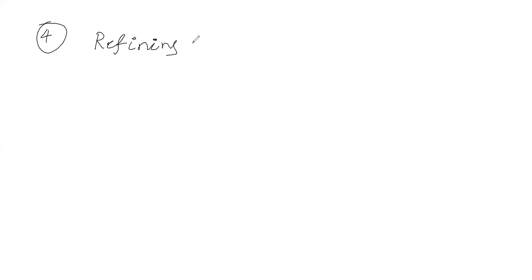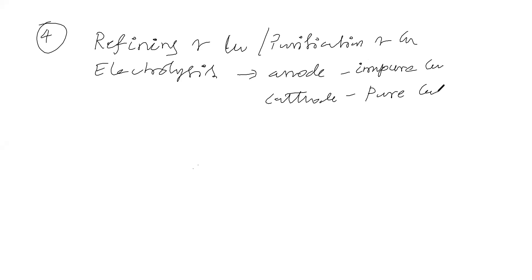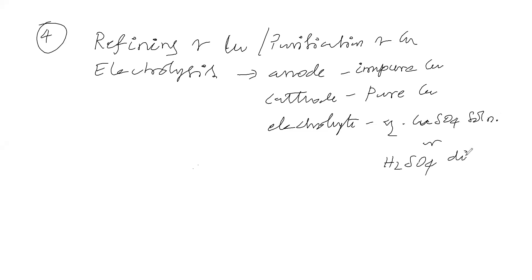In this refining of copper (electrolytic process): anode is impure copper, cathode is pure copper, and the electrolyte is an aqueous solution of copper sulfate or dilute sulfuric acid solution.